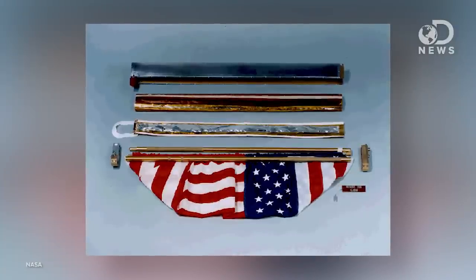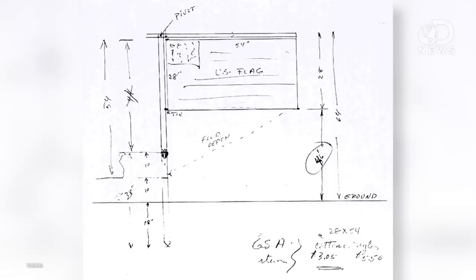And it's essentially a set of interlocking vertical poles with an attached nylon flag. As the moon doesn't have an atmosphere, the engineers added a telescoping curtain rod-like horizontal pole at the top to hold the flag out. Astronauts couldn't extend it all the way, however, something went wrong. Which is why the flags look kind of rippled in photos.